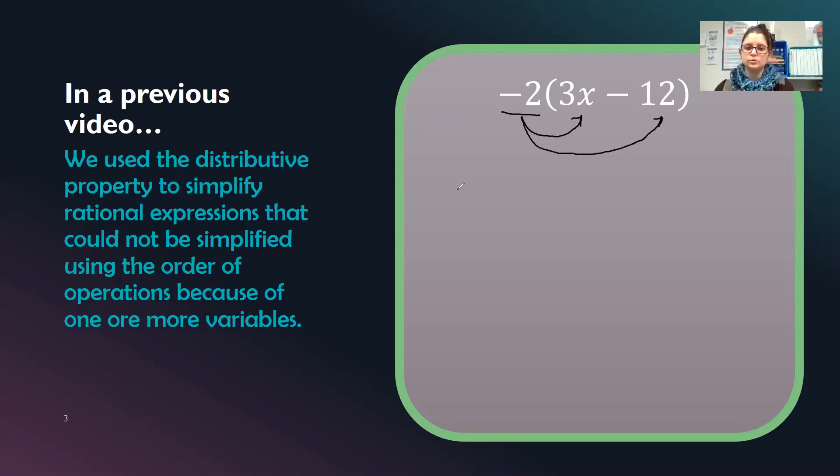So we'd say negative 2 times 3x minus negative 2 times 12. And we'd end up with negative 6x. Now we can go ahead and make this a positive or we can still say minus negative 24 and then change it to plus 24 because a minus and a negative make a positive. So negative 6x plus 24.